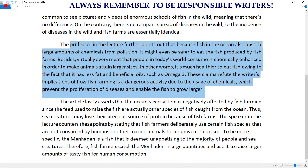The professor in the lecture further points out that because fish in the ocean also absorb large amounts of chemicals from pollution, it might even be safer to eat the fish produced by fish farms. Besides, virtually every meat that people in today's world consume is chemically enhanced in order to make animals attain larger sizes. In other words, it's much healthier to eat fish owing to the fact that it has less fat and beneficial oils such as omega-3. These claims refute the writer's implications of how fish farming is a dangerous activity due to the usage of chemicals which prevent the proliferation of diseases and enable the fish to grow larger. Okay, last body paragraph. We're almost done.